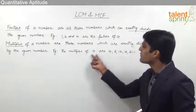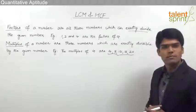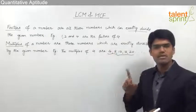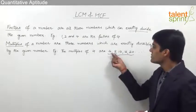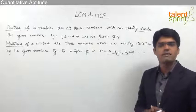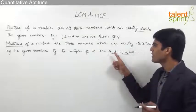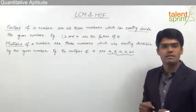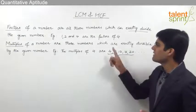For example, the multiples of 4 are 4, 8, 12, 16, 20 and so on, because these numbers are exactly divisible by 4. 4 divided by 4 is 1, 8 by 4 is 2, 12 by 4 is 3 — there is no decimal part in any of these divisions and the remainder is 0. These are essentially the multiplication table of 4.